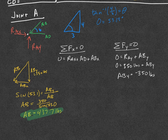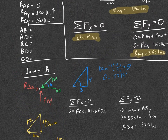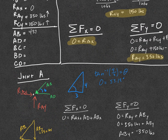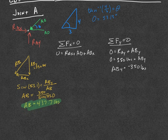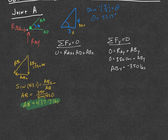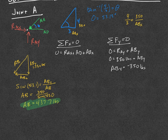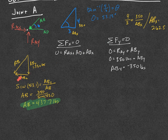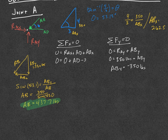At joint A, if AB is going down and to the left, it is pointing towards the joint. Towards the joint is considered compression. So I correct the arrow to point towards the joint and mark in my table: compression, 437 pounds. I'll now show a method that doesn't use trig for solving ABX. Since 350 is on the four side of the triangle and ABX is on the three side, I use a ratio. Cross-multiplying and dividing by four gives 262.5, but ABX is going left, so it is negative.